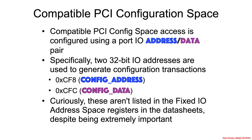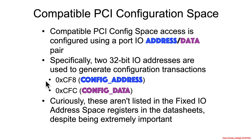Access via port IO is going to be an address-data style access — a pair of ports. Specifically, those pair of ports are called config address and config data: CF8 and CFC. Interestingly, despite the fact that it's always CF8 and CFC on Intel systems, they aren't actually listed in the fixed IO address space registers data sheet location.